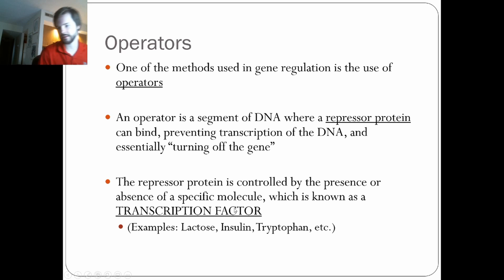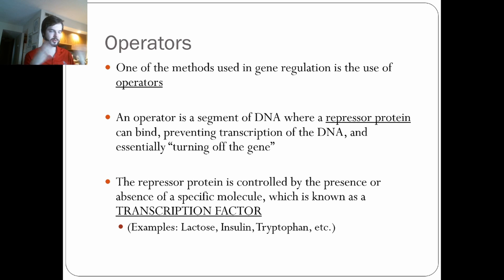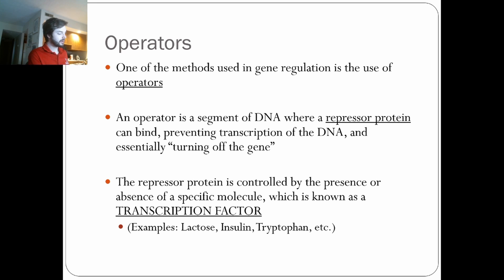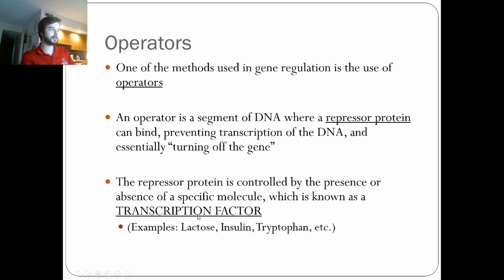The thing that activates the operator is usually called a transcription factor — it's the molecule that causes the gene to turn on or off. A good example we're going to look at tomorrow is lactose. Everyone knows what lactose is because of people who have lactose intolerance. Lactose is the sugar found in milk, and it is digested by lactase, which is naturally produced by most people. Lactase in your body will only be produced if there's lactose present. You wouldn't want to be making lactase if there's no lactose — it doesn't make sense to waste resources. So that makes lactose the transcription factor.